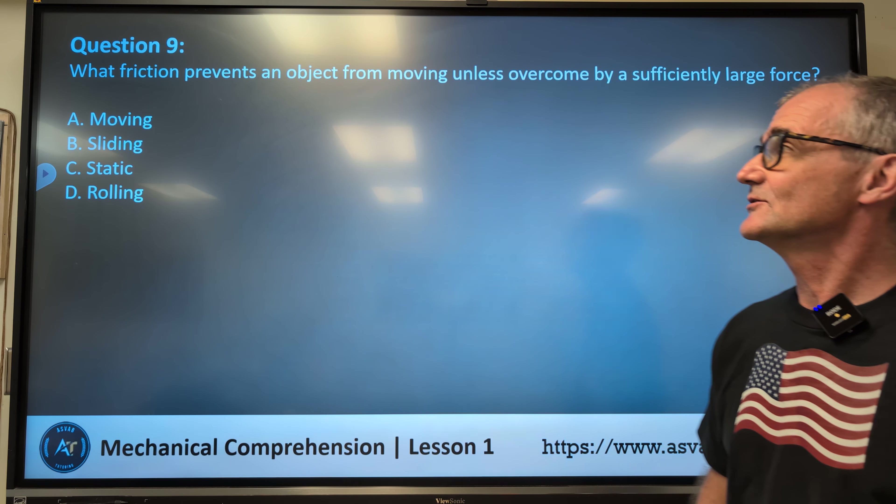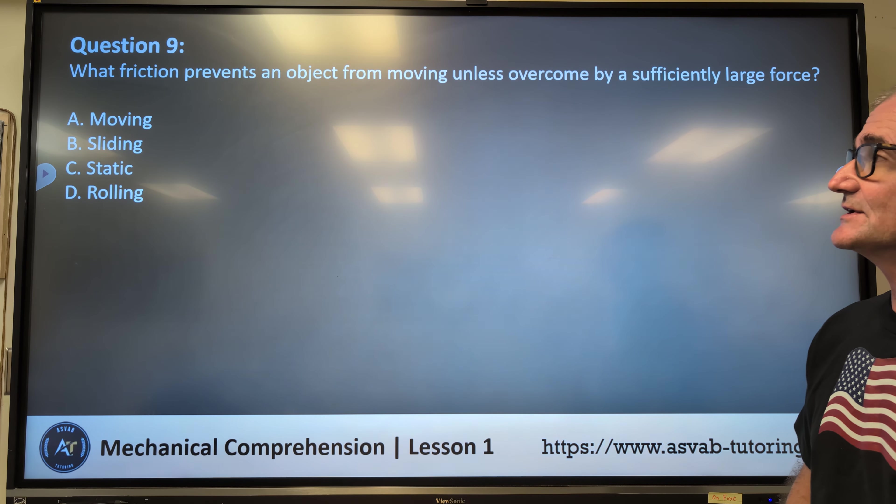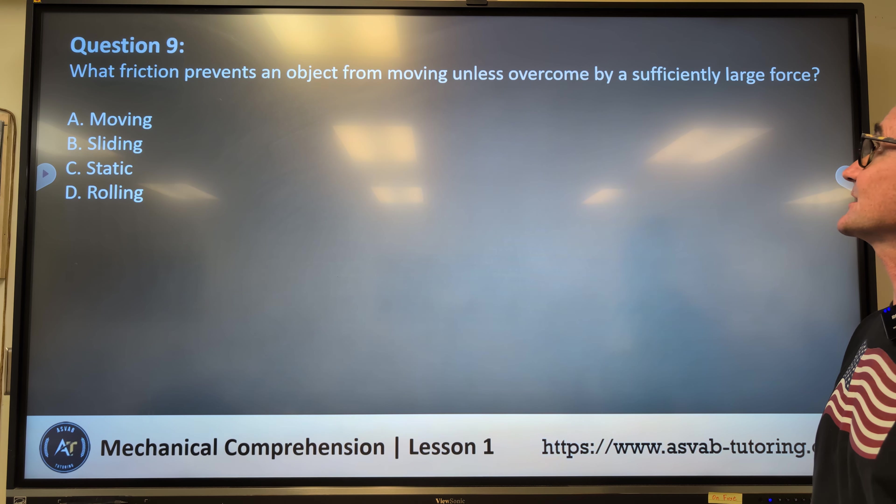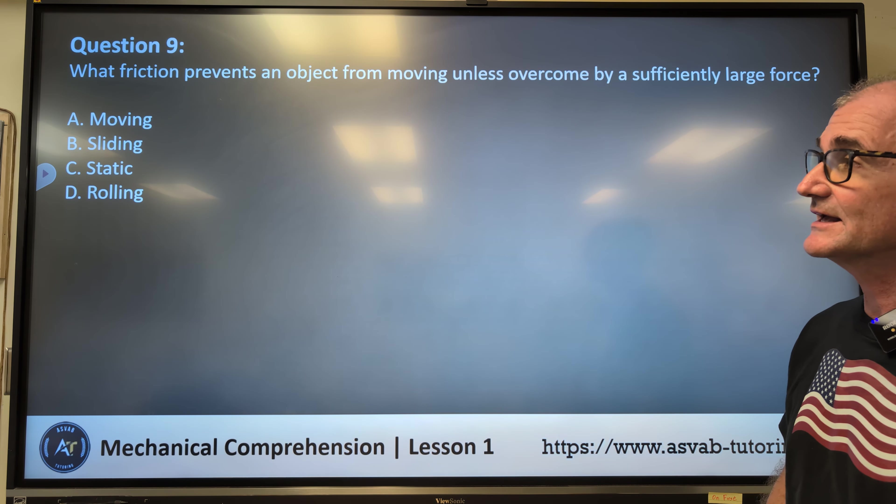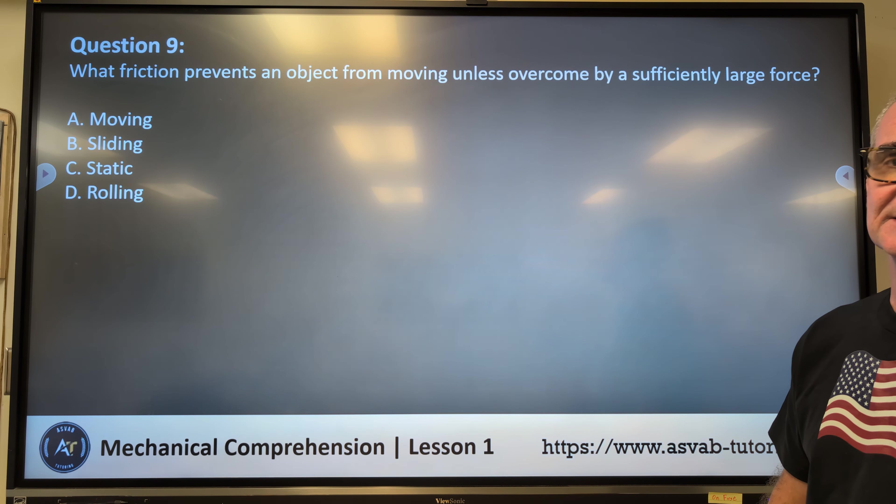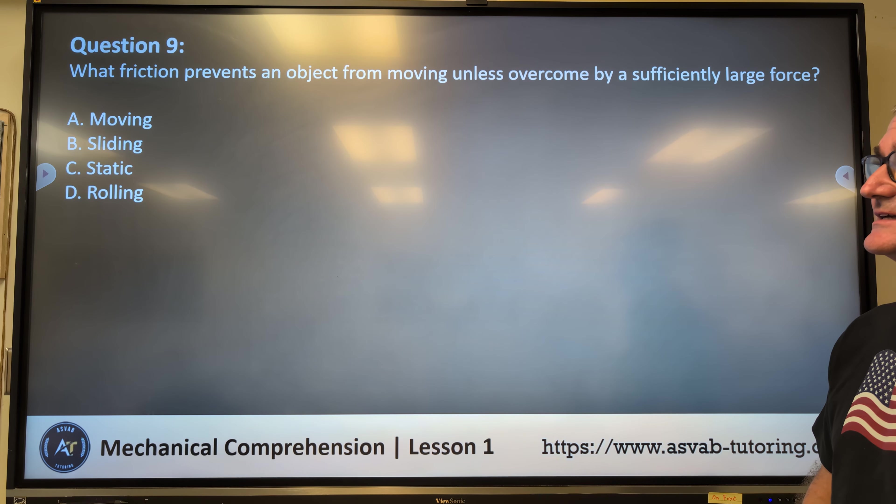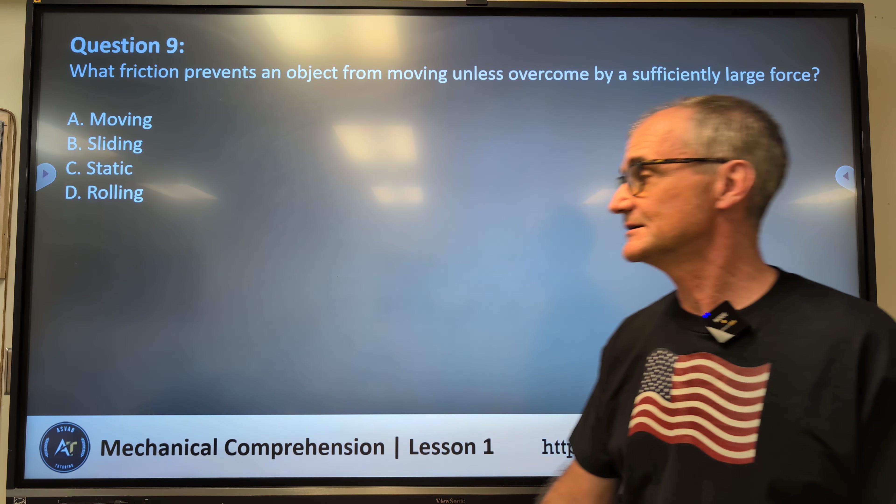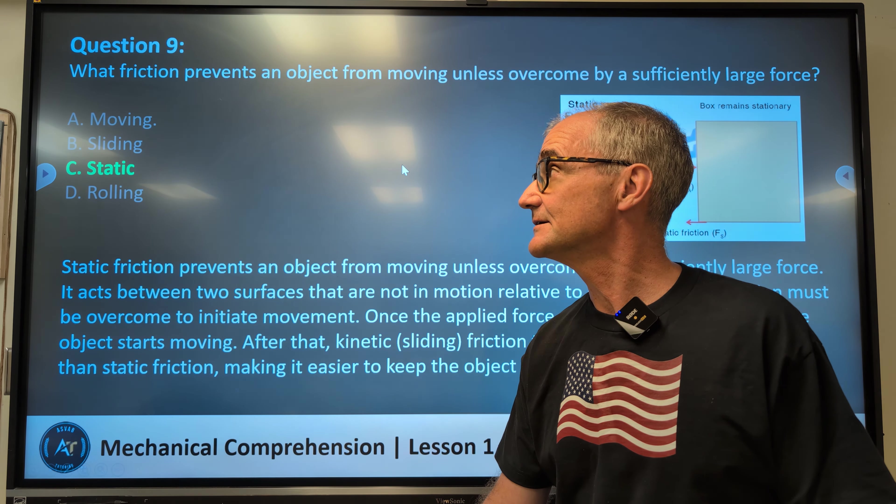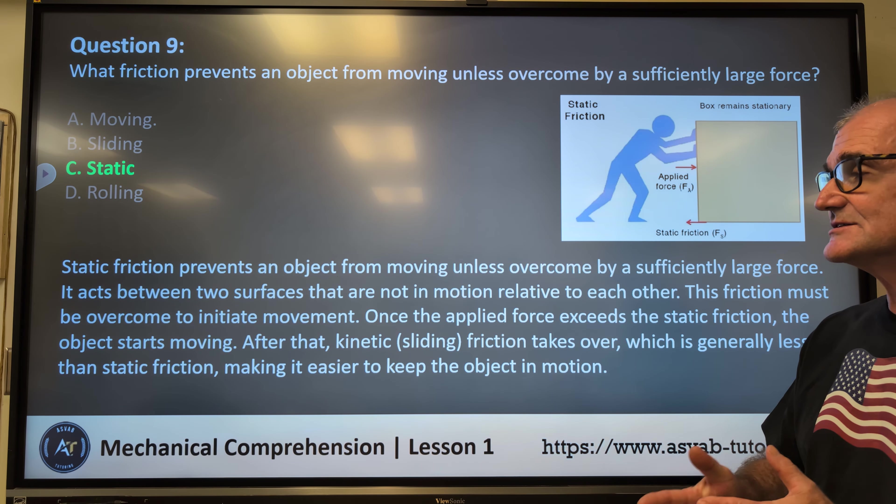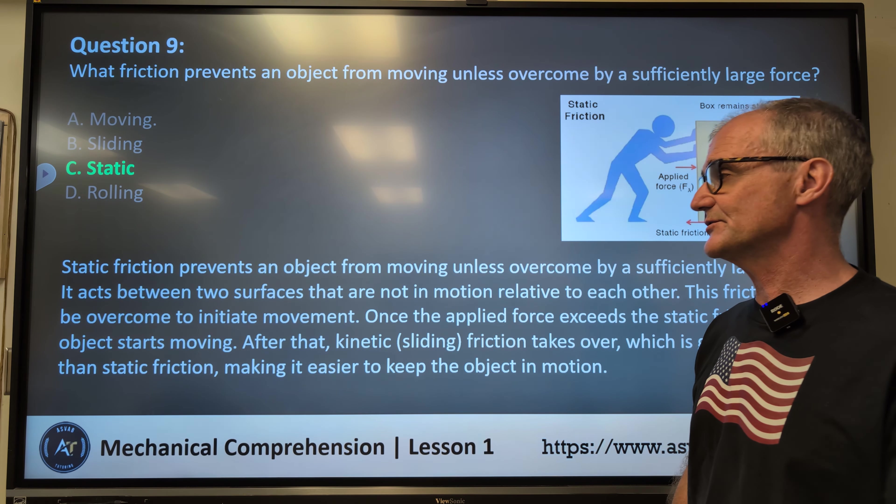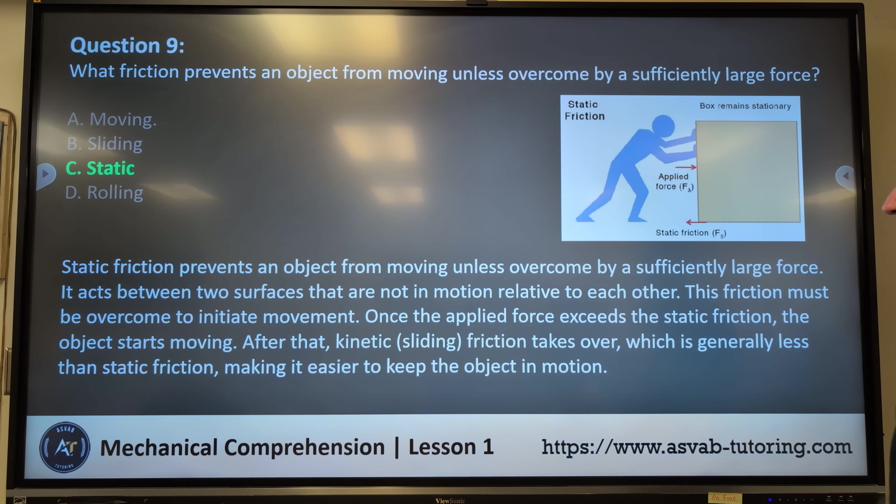Number nine. What friction prevents an object from moving unless overcome by a sufficiently large force? A, moving, B, sliding, C, static, or D, rolling friction. Correct answer, answer C, static friction. Static means no movement. So static friction prevents an object from moving unless overcome by a sufficient large force. It acts between two surfaces that are not in motion relative to each other.